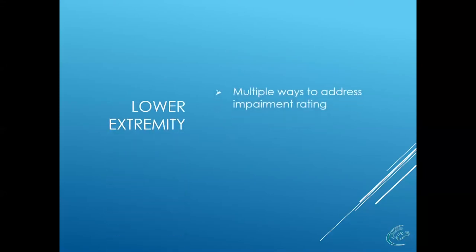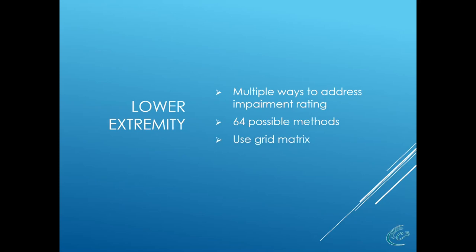Now for the lower extremity. There are 64 possible methods for assessing a lower extremity impairment rating, which creates significant room for error. There is a grid matrix in the fifth edition of the guides — while we can't use the fifth edition, the data is the same and the appeals panel has referred to it. The grid matrix tells you when you can combine two different methodologies. For example, if you're using a table 64 award, you don't get a range of motion award. Conversely, for arthritis you can get range of motion. Get a copy of that grid matrix to understand what can and cannot be combined.